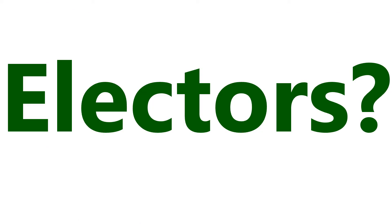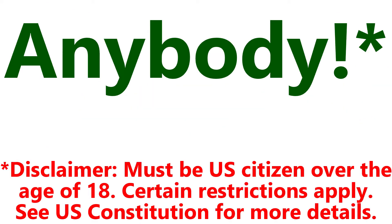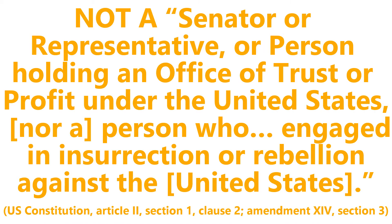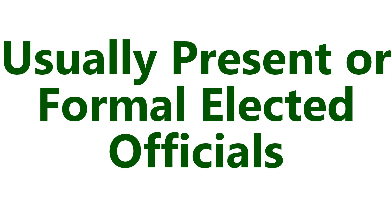Now, who in the world are the electors? It can be anybody. Disclaimer: must be a US citizen over the age of 18. Certain restrictions apply — see the US Constitution for more details. Basically, as long as you are not a senator or representative, nor a person holding an office of trust or profit under the United States, nor a person who engaged in insurrection or rebellion against the United States, you can be an elector. In practice, electors are usually present or former elected officials.